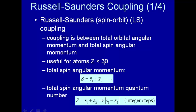Russell-Saunders coupling is useful for light atoms, typically Z less than 30. If you go above Z equal 30 for heavy atoms, there's a very strong interaction between the spin angular momentum and the orbital angular momentum. So you can't just add up all the intrinsic spins and all the orbital angular momenta and then interact them. You have to interact each one separately to get a total angular momentum for each individual electron and then interact those. So let's consider just Russell-Saunders coupling.